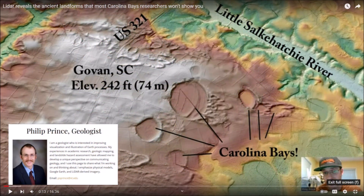Philip Prince, who has the YouTube channel The Geo Models, made a video about some features that most Carolina Bay researchers won't show you, to make a point that wind has significantly influenced the landscape where the Carolina Bays are found. Devon Jordan brought this video to my attention. The video compares some Carolina Bays and other lakes in different parts of the world to demonstrate the sand sheets that are formed downwind from these features.